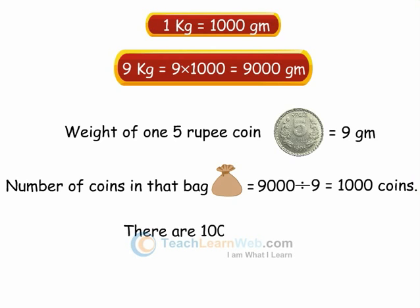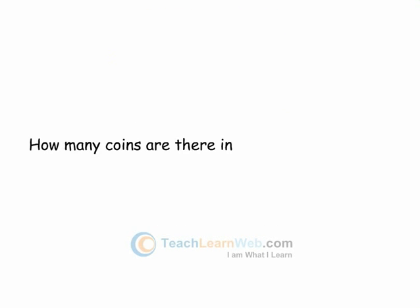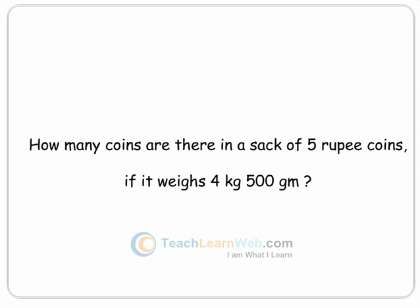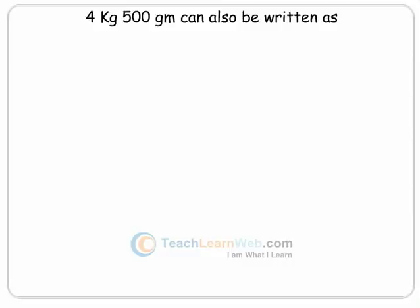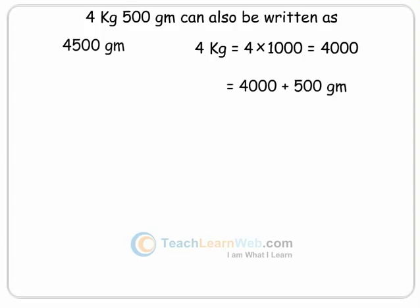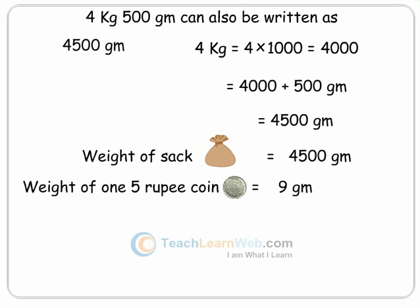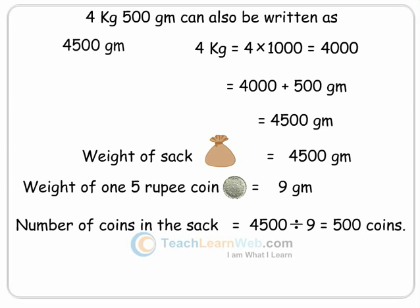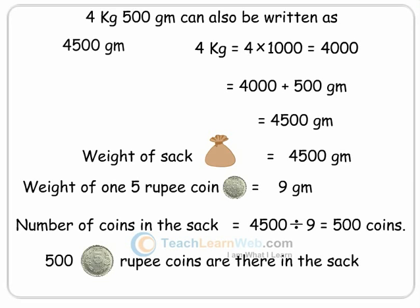There are one thousand coins in it. How many coins are there in a sack of five rupee coins if it weighs four kg five hundred grams? Four kg five hundred grams can also be written as four thousand five hundred grams, as four kg equals four into one thousand, which equals four thousand, plus five hundred grams equals four thousand five hundred grams. So the number of coins in that sack equals four thousand five hundred divided by nine, which equals five hundred coins. Finally, there are five hundred five rupee coins in that sack.